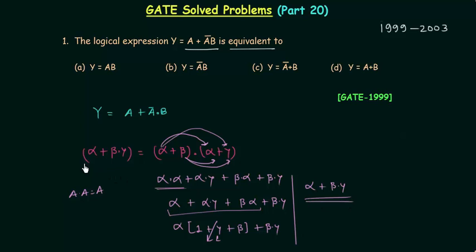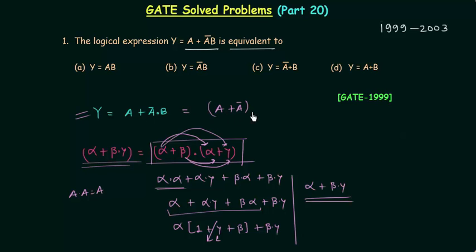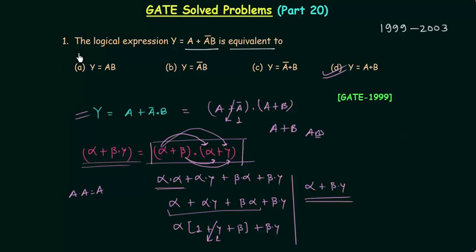Using this result in the given logical expression, we get (A or A complement) and (A or B). Since A or A complement equals 1, we finally have A or B as the answer. Looking at the four options, option D is the correct option.